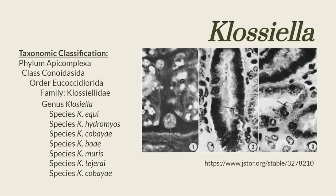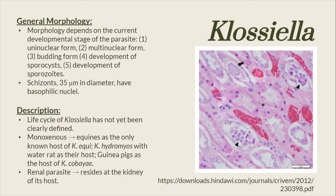Moving on, we have the genus Glosiella. The life cycle of the genus Glosiella has not yet been clearly defined, but scientists have found that they are monoxenous, meaning these parasites are host-specific and spend their entire lifetime in that specific host. For example, Glosiella equinenes are known to be parasites of equines or horses, Glosiella hydromilos known to be parasites of water rat, and Glosiella cobaye as parasites of guinea pigs. They are renal parasites, residing in the kidney of their host. Their morphology is dependent on the developmental stage: uninuclear form, multinuclear form, budding form, development stage of sporocysts, and development stage of sporozoites. Their schizonts are 35 micrometers in diameter and have basophilic nuclei.